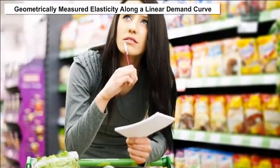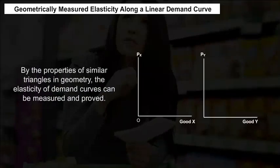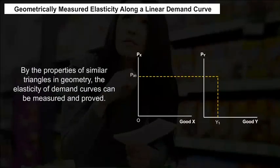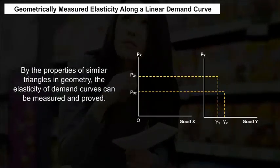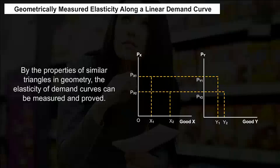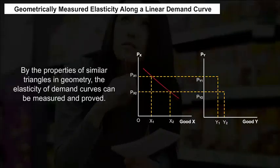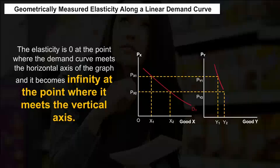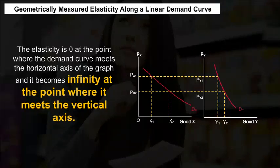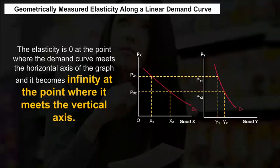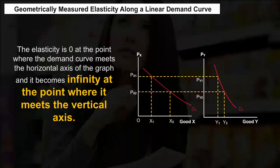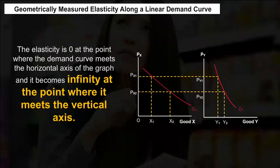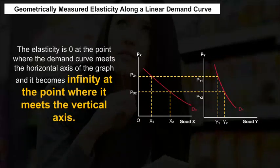Geometrically measured elasticity along a linear demand curve: By the properties of similar triangles in geometry, the elasticity of demand curves can be measured and proved. Elasticity is zero at the point where the demand curve meets the horizontal axis of the graph, and becomes infinity at the point where it meets the vertical axis.